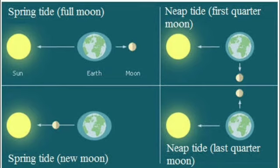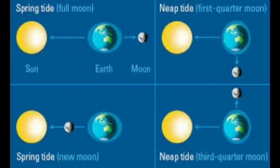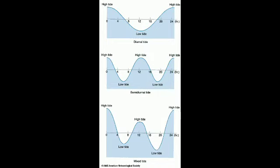Tides are helpful in navigation. At the time of high tide, the depth of water near coastal areas increases and enables big ships to enter ports. Kandla port in Gujarat and Diamond Harbour in West Bengal exist only because of tides. Tides also help in making rivers navigable — at high tide, the depth of water in rivers increases and they become navigable. Tides also help in removing mud brought by rivers, thus preventing the silting of harbors.